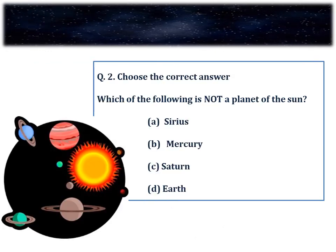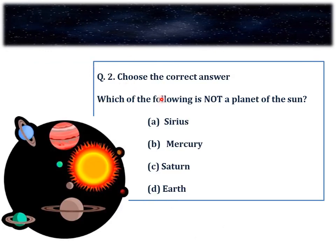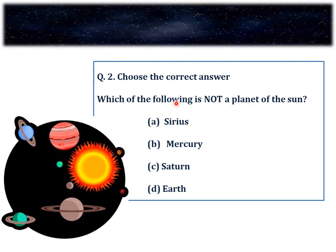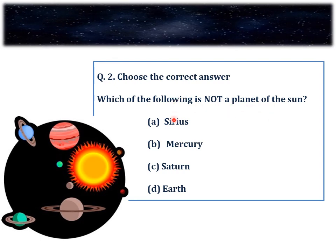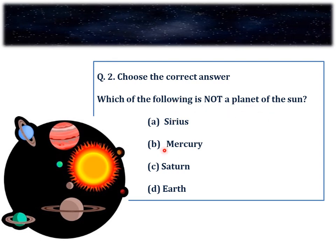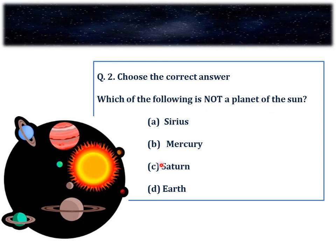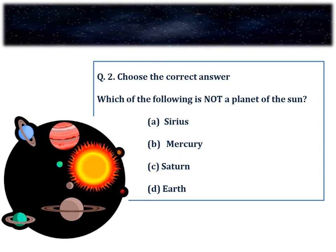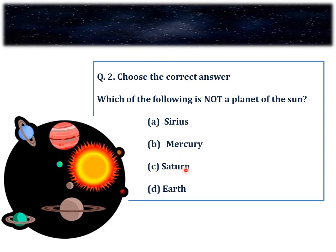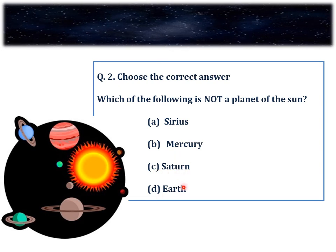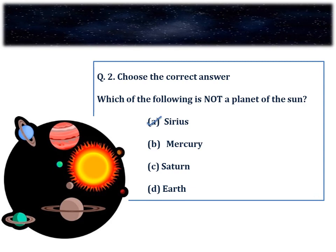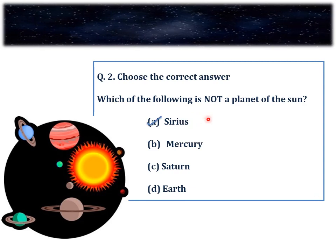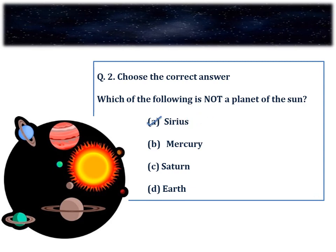Question number 2. Choose the correct answer. Which of the following is not a planet of the sun? A. Sirius, B. Mercury, C. Saturn, D. Earth. We know that Mercury, Saturn and Earth are planets of the sun, except for Sirius which is the brightest star in the sky.